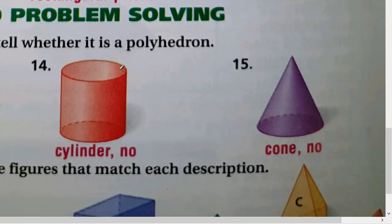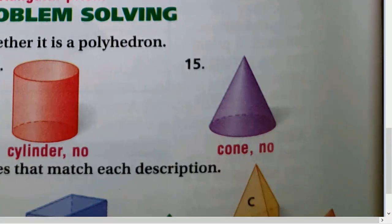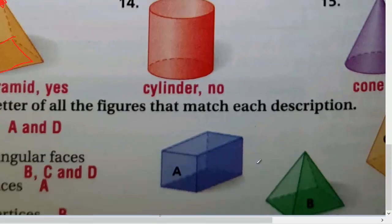Question fourteen: we have two parallel and congruent bases, so it is a prism. The base is a circle, so this figure is a cylinder. Is it a polyhedron? No, because it has curved sides and a circle base. Question fifteen: we have only one base and that base is a circle, so we call it a cone. It is not a polyhedron because it has curved sides.